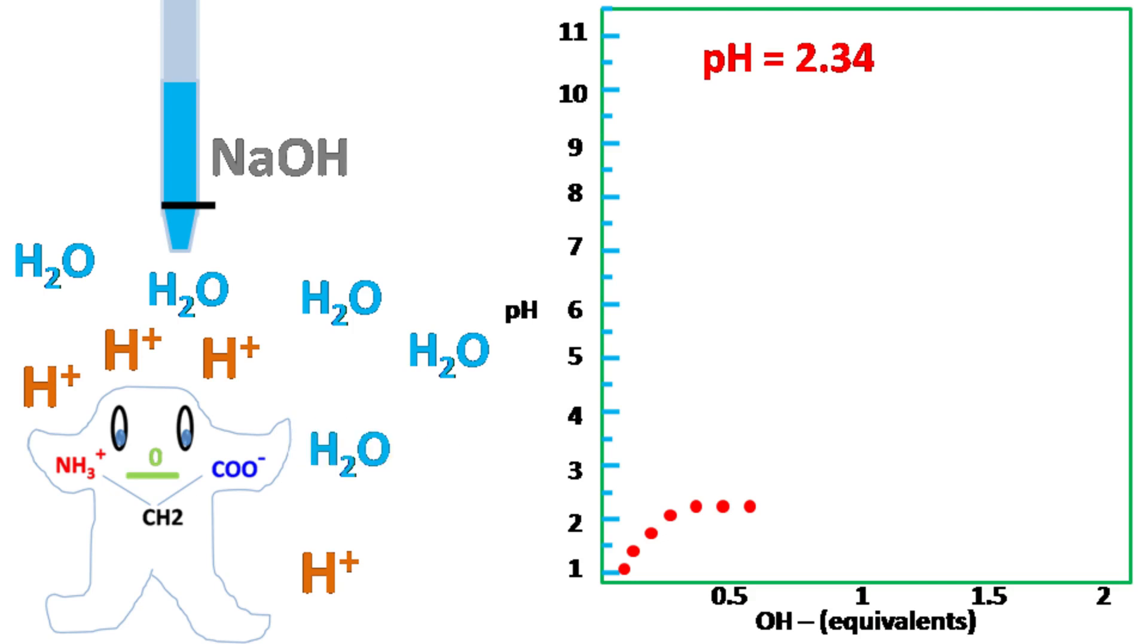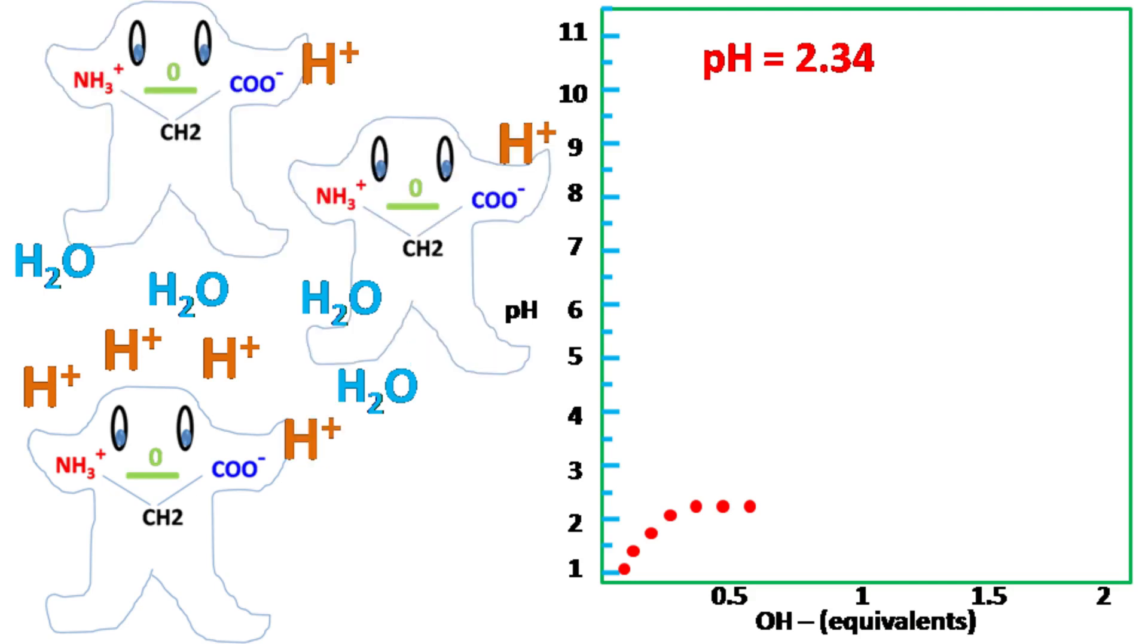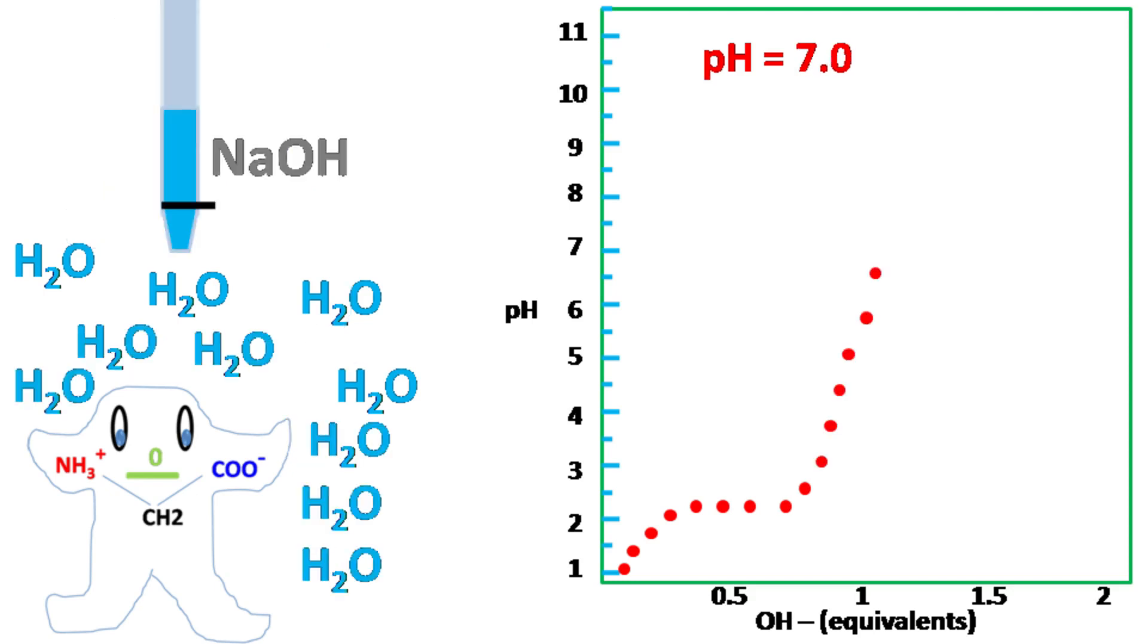As the carboxyl group of so many glycine molecules are donating H plus ions, the pH remains constant even after addition of NaOH. Once the carboxyl group of all the glycine molecules have donated their H plus, the further addition of OH minus causes sudden rise in pH.